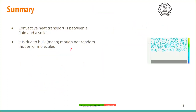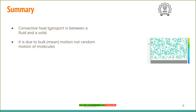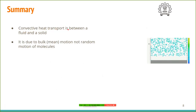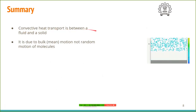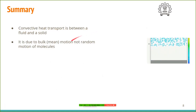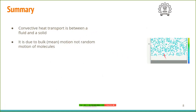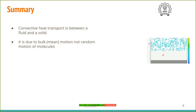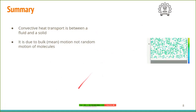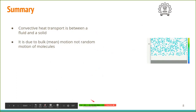To summarize: convective heat transfer is a transfer of heat between a fluid and a solid, and it happens due to the mean motion — not the random motion — of particles in the fluid.